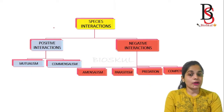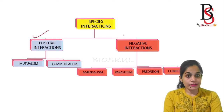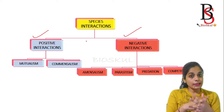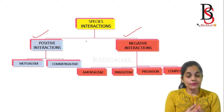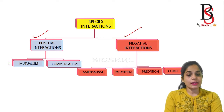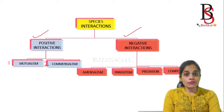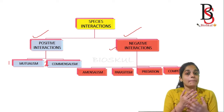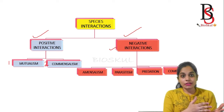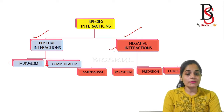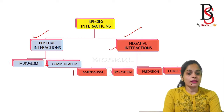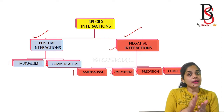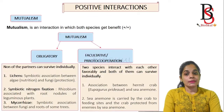Species interactions are divided into two types: positive interaction and negative interaction. Positive interaction — where both interacting species benefit from each other — is divided into two types: mutualism and commensalism. Negative interaction is where one of the interacting organisms gets benefit by harming or without harming the other individual. Negative interactions are of four types: amensalism, parasitism, predation, and competition.